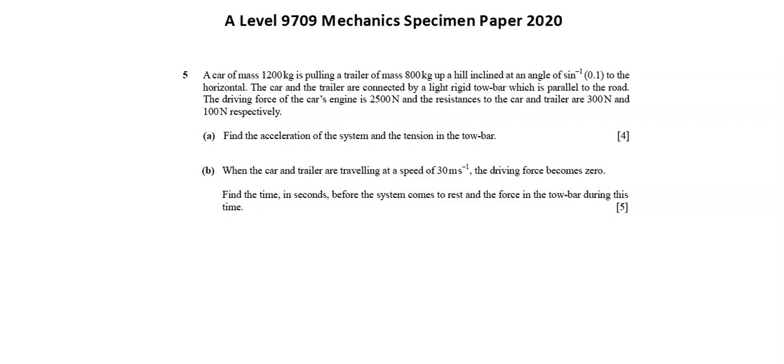A car of mass 1,200 kilograms is pulling a trailer of mass 800 kilograms up a hill inclined at an angle of inverse sine of 0.1 to the horizontal. The car and the trailer are connected by a light rigid tow bar which is parallel to the road. The driving force of the car's engine is 2,500 newtons and the resistances to the car and trailer are 300 newtons and 100 newtons respectively.